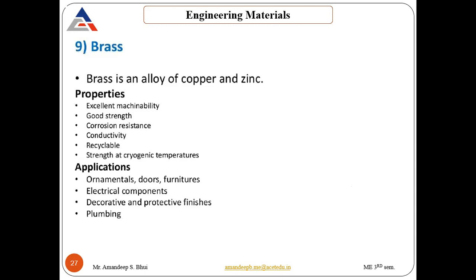Brass is an alloy of copper and zinc. Properties: excellent machinability, good strength, corrosion resistant, good electrical and thermal conductivity, recyclable, and very good strength at cryogenic temperatures. Applications: used in making ornaments, doors, furniture, electrical components, decorative and protective finishing, and in plumbing because it is a highly corrosion resistant material.